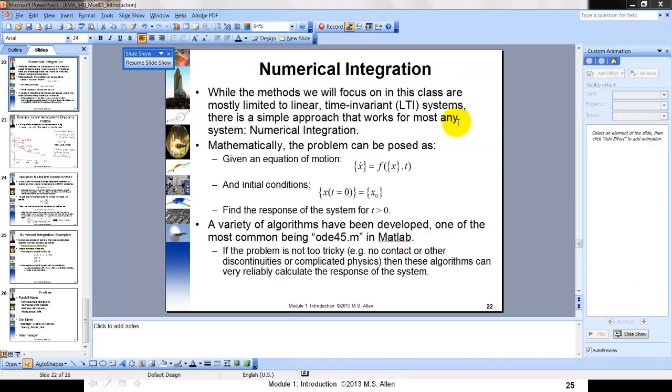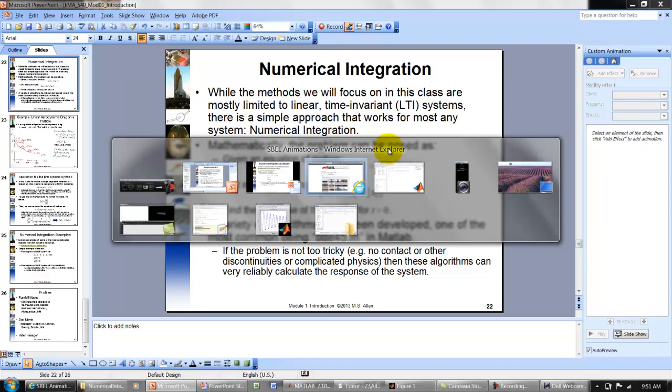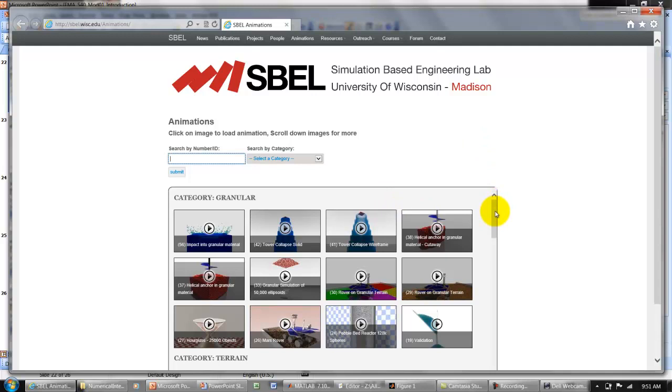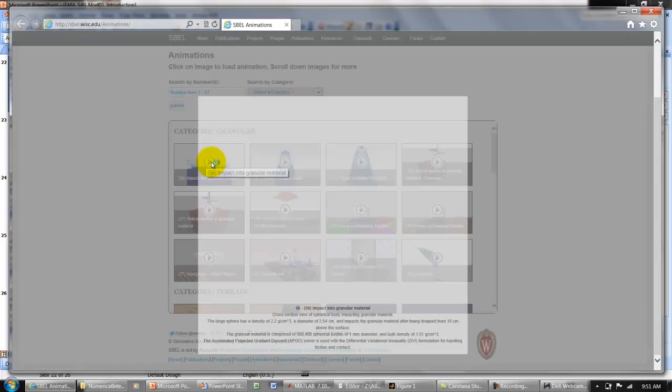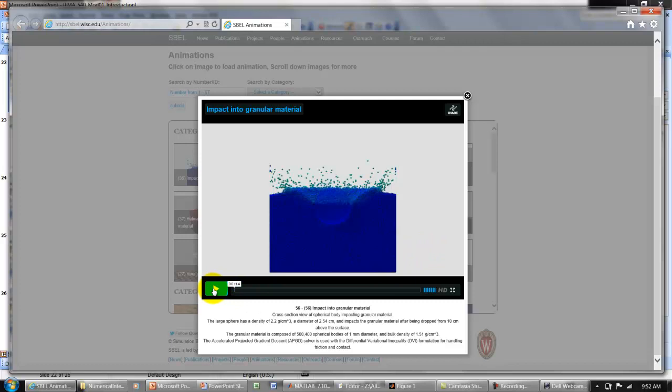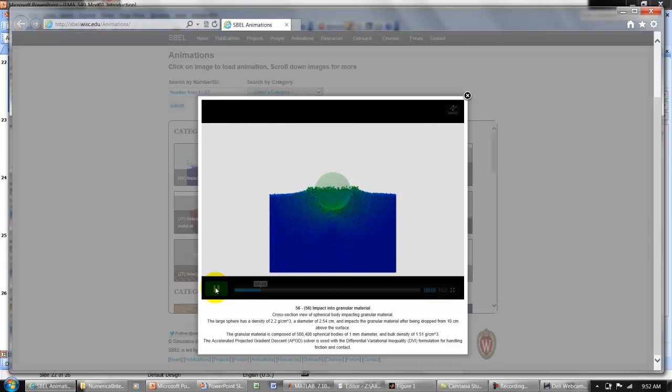So what can this do? Well first I'll show you, maybe out on the lunatic fringe, some of the craziest, most complicated systems that one could imagine dealing with here. These are some simulations that were done by the simulations-based engineering lab here at the University of Wisconsin-Madison. Here they tackle hugely complicated systems with many, many particles. So here's an example of impact of a particle into a granular material. This could be a weapons application or lots of other applications. Here they've modeled all of these little balls using Newton's laws, F equals MA. And they're also modeling contact between the balls, which is one of the most difficult things to do.